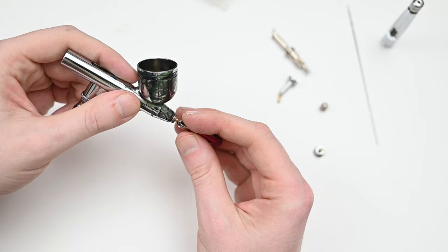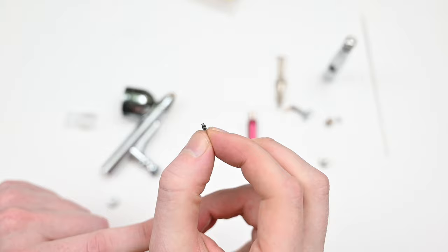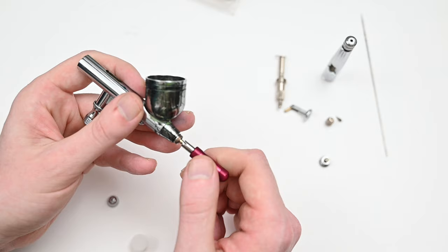But of course, if you're doing general painting, I would just stick with the 0.3, which comes equipped in the airbrush when you buy it. And if you really want to spray some thicker paints like base coats, you could swap over to the 0.5, which is going to help you out.